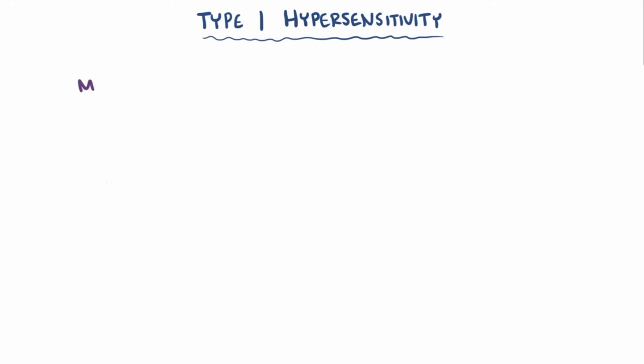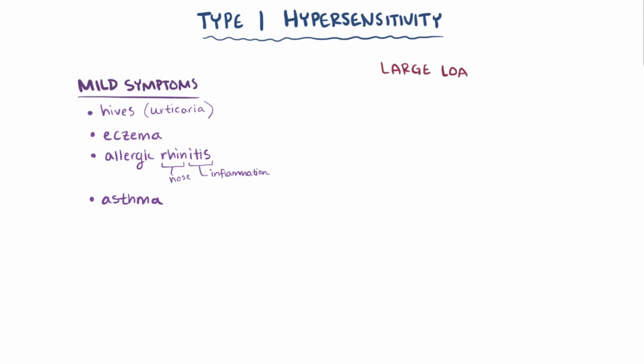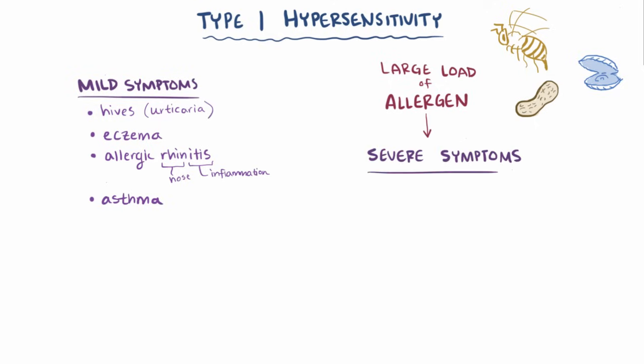A lot of people with allergic reactions experience mild symptoms, like hives, eczema, allergic rhinitis, which is inflammation of the nose, as well as asthma. Certain people, though, when exposed to a large load of specific allergens, like with bee stings, seafood, or peanuts, can have a really severe and potentially life-threatening allergic reaction.